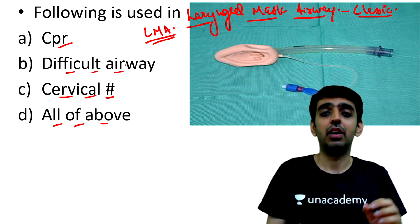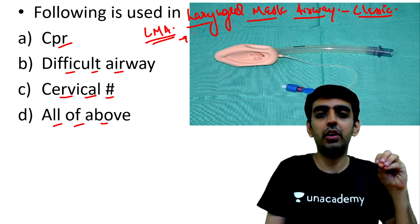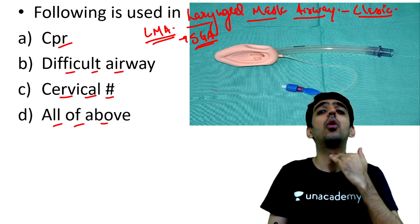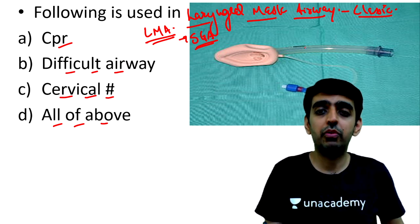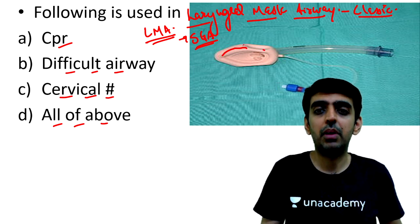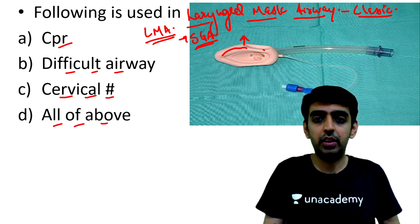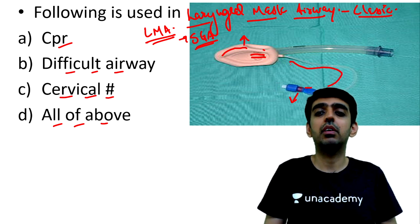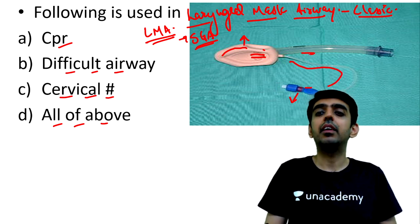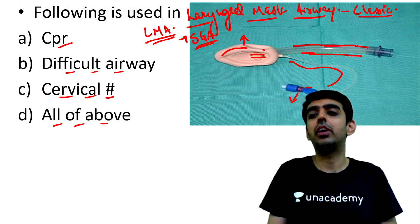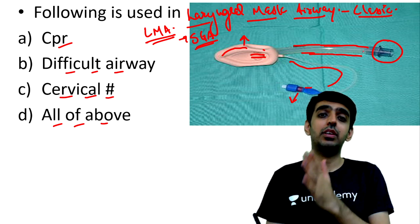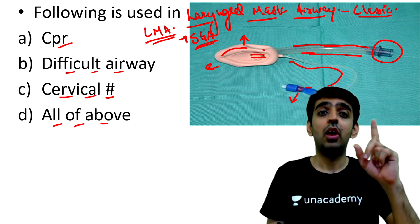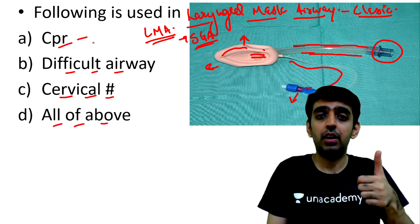Supraglottic airway devices sit above the level of the glottic opening. The parts of the LMA visible here include the cuff, the aperture, the pilot balloon with inflatable cuff, the airway tube through which air passes, and the connector end which connects to the circuit. The patient end sits above the glottis.